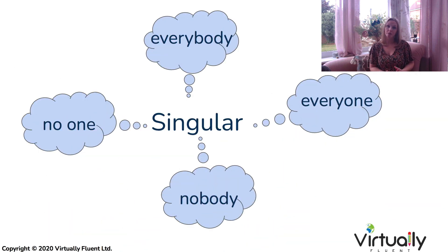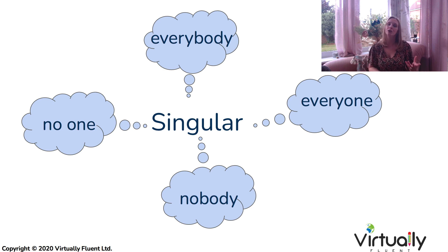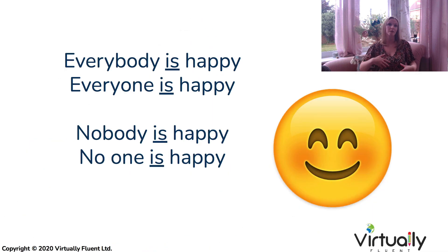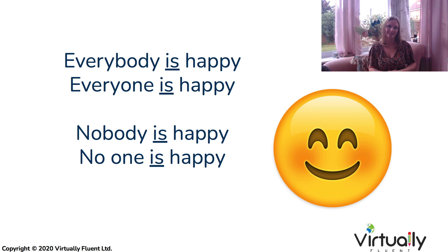It's also important to note that different forms of 'every' and 'no' simply always use the singular form — everyone, everybody, no one, nobody. For example, 'everyone is happy,' 'nobody is happy.' Simply always with singular.